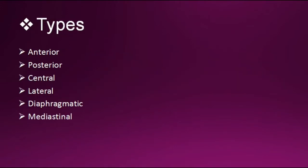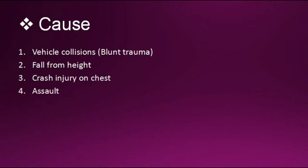Types of flail chest include: anterior, posterior, central, lateral, diaphragmatic, and mediastinal. Flail chest can occur at any of these sites.